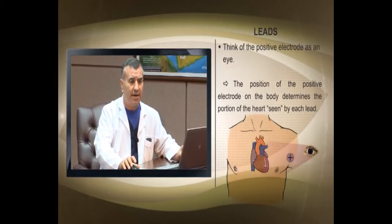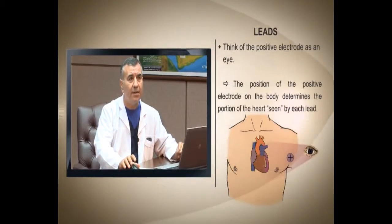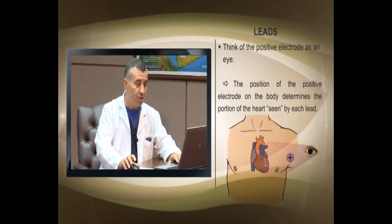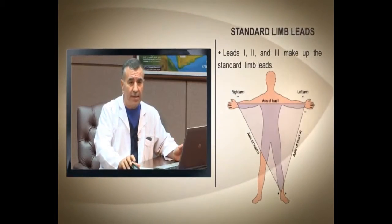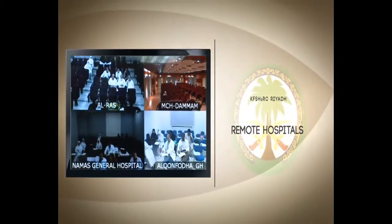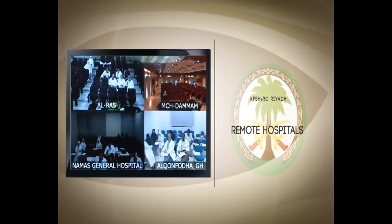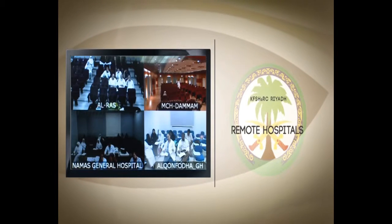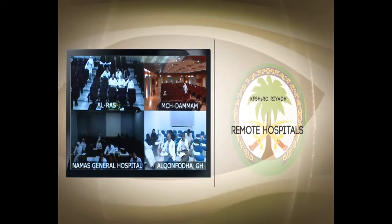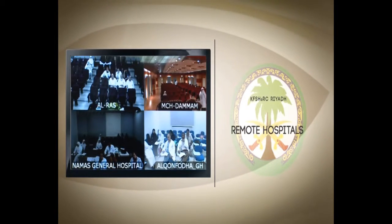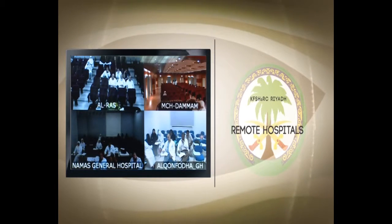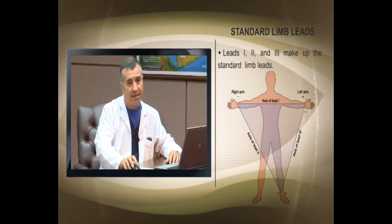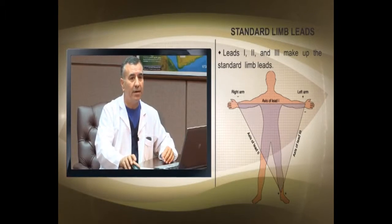Lead placement is very important — the lead picks up the electricity, so placement must be precise. The standard limb leads — right arm, left arm, and left foot — when placed correctly should give you lead 2 upright, meaning the P wave, R wave, and T wave are all positive. Any technician performing an ECG and any doctor reading it must verify this. If lead 2 is inverted, it means the right arm and left arm leads have been switched, reversing the axis.